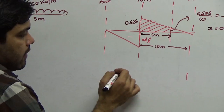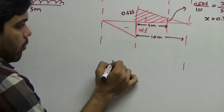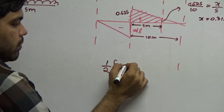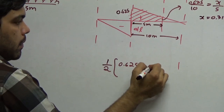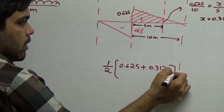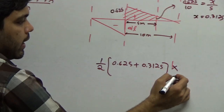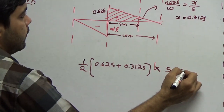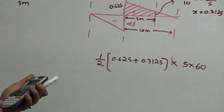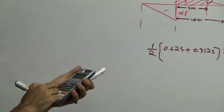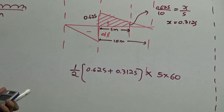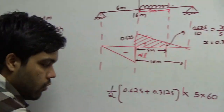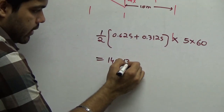The maximum positive shear force is calculated by taking the average ordinate — (0.625 + 0.3125) / 2 — multiplied by the UDL span of 5 meters and the intensity of 60 kN per meter. This gives (0.9375/2) × 5 × 60 = 140.63 kN.